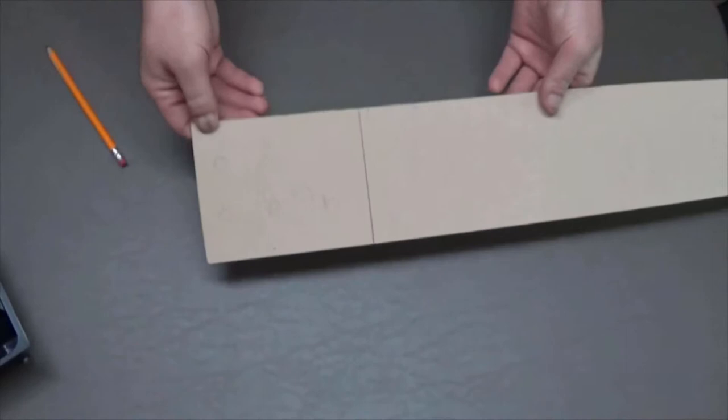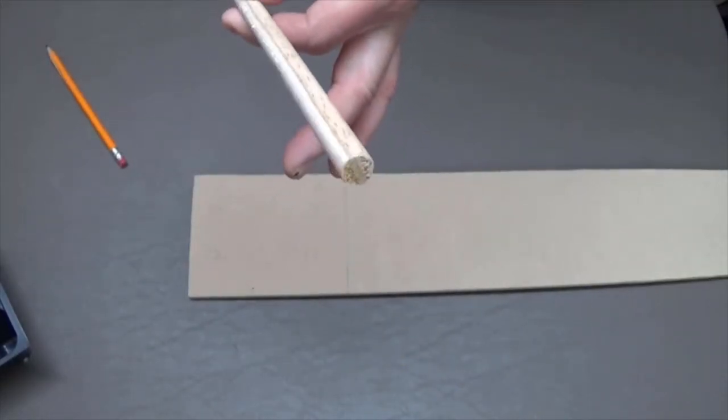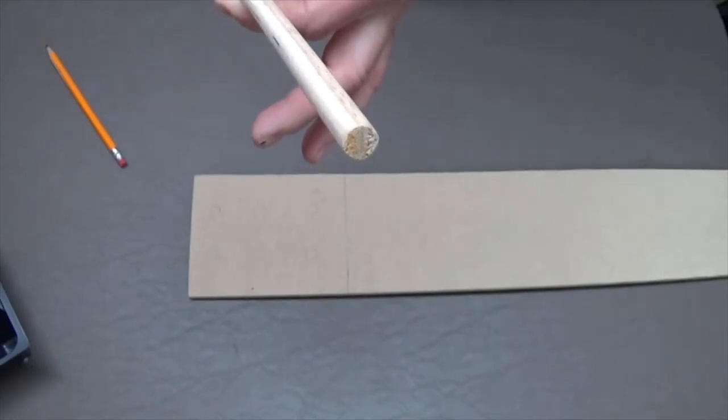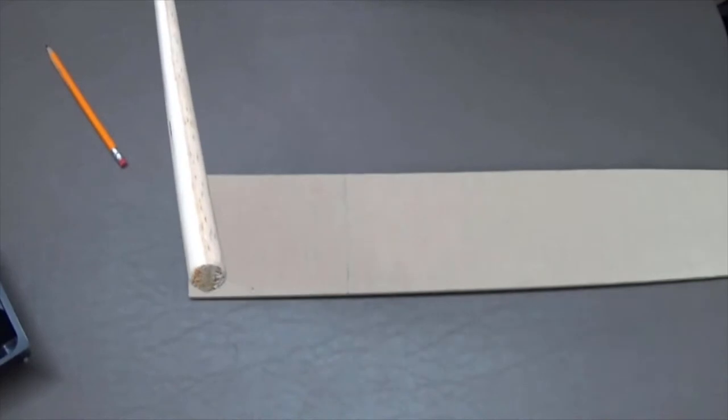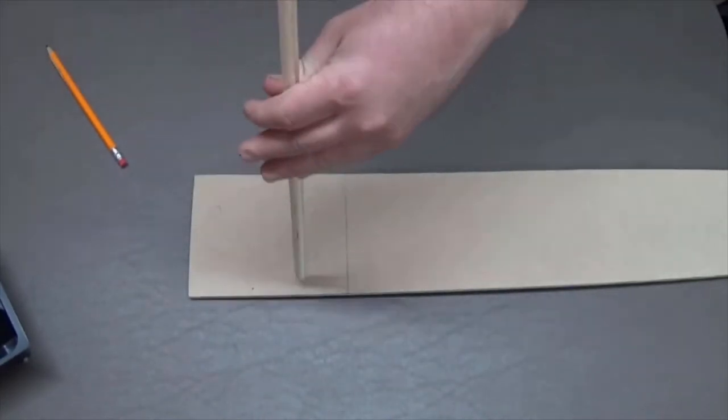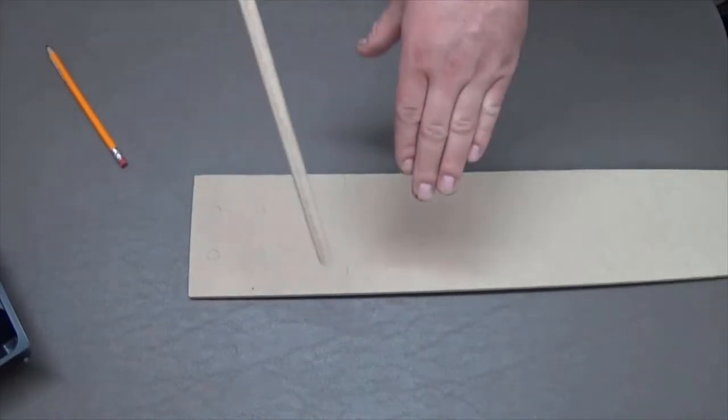Because this dowel is a 3/8 dowel, we're going to take a drill bit that is that exact same size or even slightly smaller so we can push this through and glue it in. We're going to go ahead and drill.